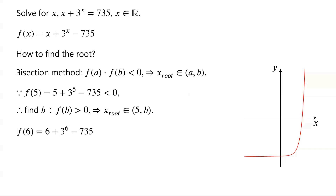f of 6 equals 6 plus 3 to the power of 6, minus 735. 3 to the power of 6 is equal to 729. So f of 6 equals 6 plus 729 minus 735, which is equal to 0.